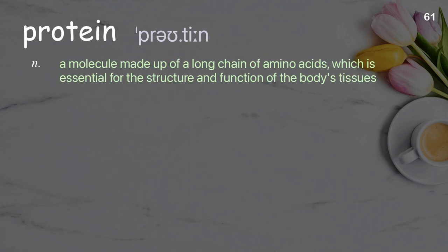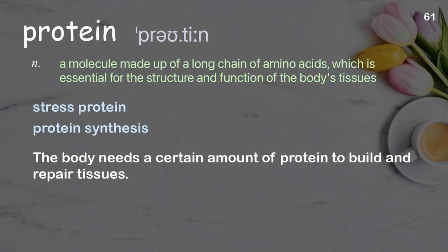Protein: A molecule made up of a long chain of amino acids, which is essential for the structure and function of the body's tissues. Examples: Stress protein, protein synthesis. The body needs a certain amount of protein to build and repair tissues.